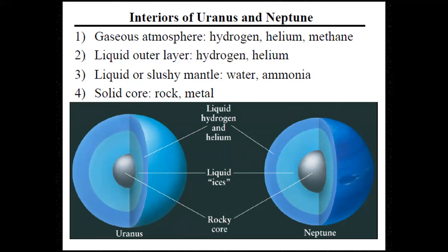There's a gaseous atmosphere like Jupiter and Saturn. They have hydrogen and helium a lot, but there's a little bit of methane as well. These planets get this bluish color because of that presence of methane. Then the liquid outer layer is made of hydrogen and helium. The mantle is water and ammonia. It's liquid ices. In the middle, we have this rocky core. It is solid, rock and metal.